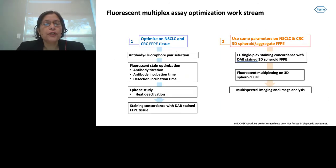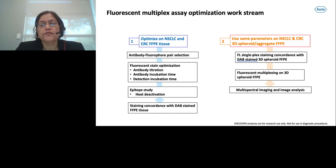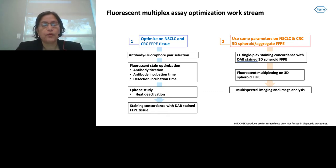The workflow starts with NSCLC and CRC FFPE tissue, where we optimized antibody-fluorophore pairing, fluorescent stain optimization, epitope studies, and staining concordance. We then transferred the protocol and tested it on NSCLC and CRC 3D spheroid aggregates, checked staining concordance, and finally performed multispectral imaging and image analysis using the Vectra 3 platform from Akoya Biosciences.